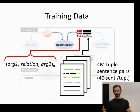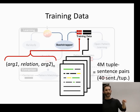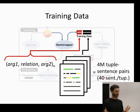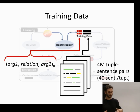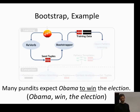There are four million tuple-sentence pairs that result, roughly forty sentences per tuple. For example, 'Obama wins the election' might be paired with 'Many pundits expect Obama to win the election.' They also check about a hundred of these pairs to validate the approach. The idea is that having a variety of different ways the same fact is asserted allows us to come up with a general way of understanding how information is conveyed.